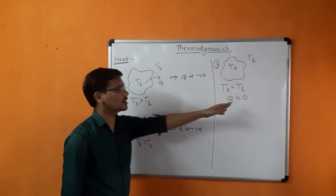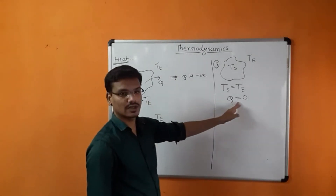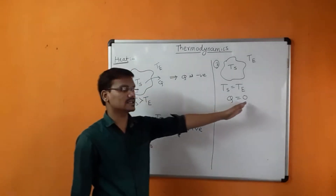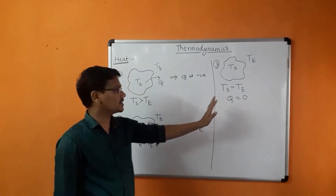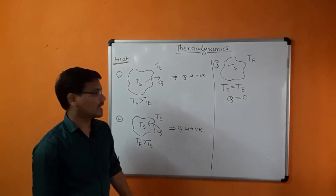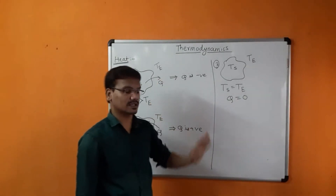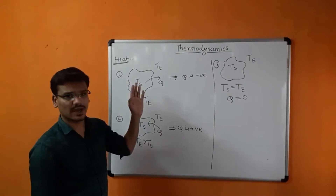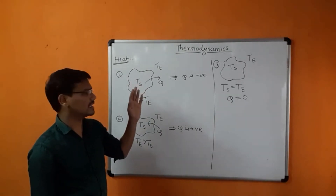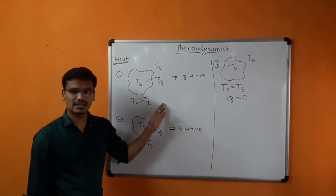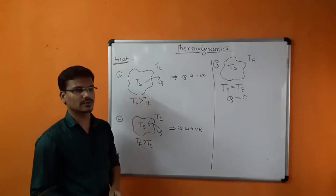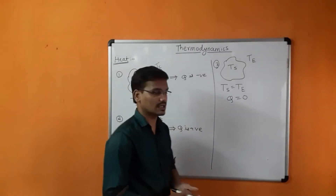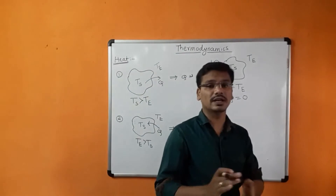So Q can be positive, negative, or zero. Similarly, work done is also positive, negative, or zero. Heat can be positive, negative, or zero. This is all about the sign convention for heat.